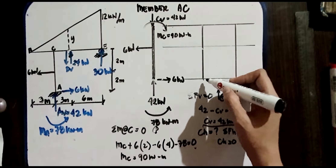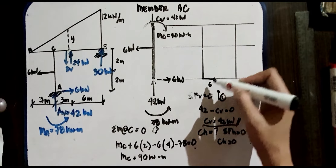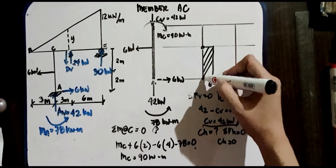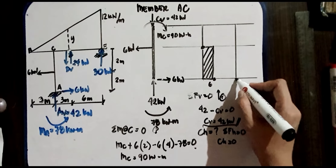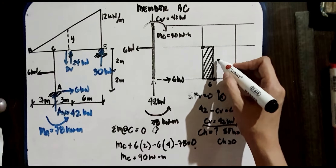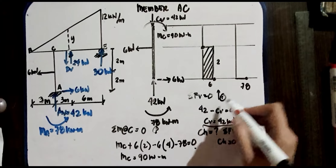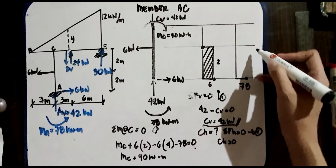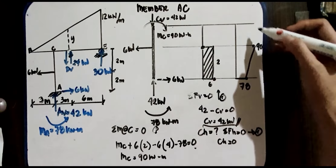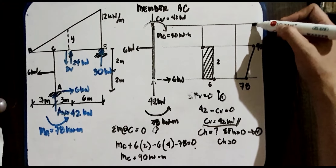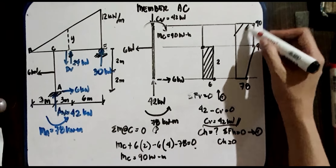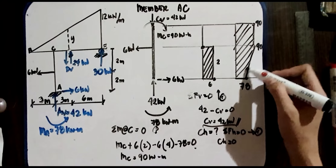Now we draw the shear diagram: starting at 6, no load in between, then it drops. For the moment diagram, the moment starts at 78. Then 6 × 2 = 12, so 78 + 12 = 90. This confirms our MC value of 90 kN·m. These are our shear and moment diagrams for member AC.